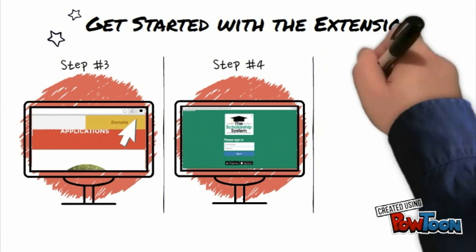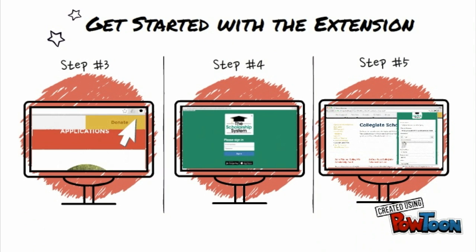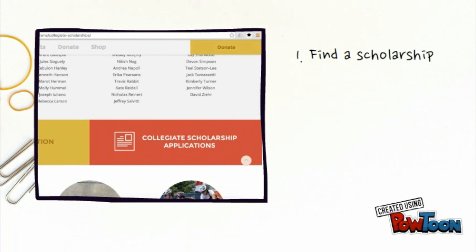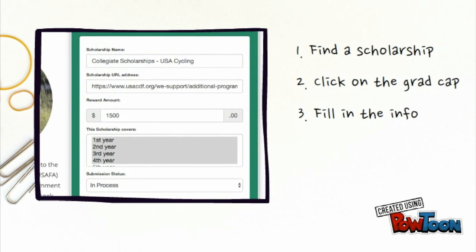Once you're logged in, it is time for the fun to begin. Find a scholarship of your choice that you want to apply to and click on the graduation cap button. You'll see that the title and link auto-populate, and then you can enter the award amount, the years it's for, and whether or not it's in process.